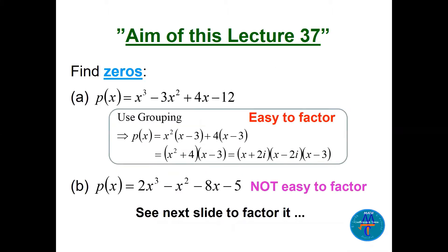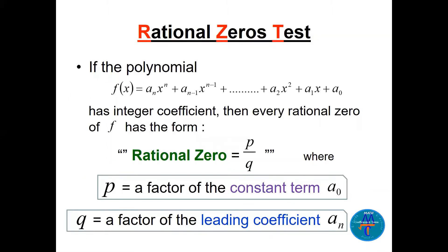The aim of this lecture is this: if we have a polynomial function of degree three, one may be easy to factor by grouping — take x² out, factor (x−3), take 4 out, factor (x−3). But another cubic is not easy to factor, and since we cannot factor it directly, we need a theorem for such polynomials.